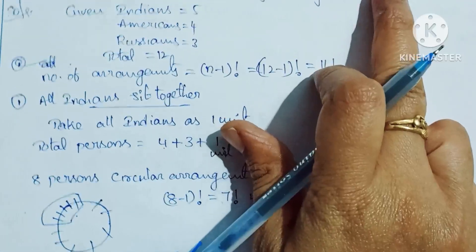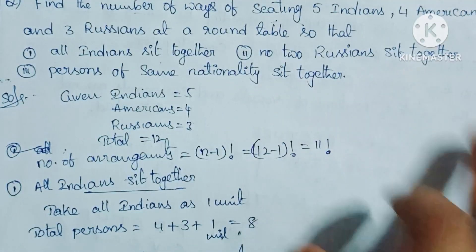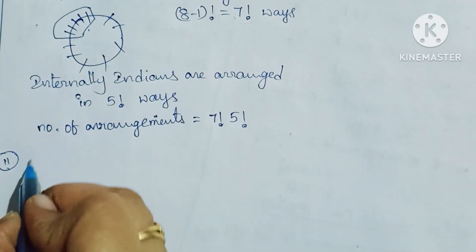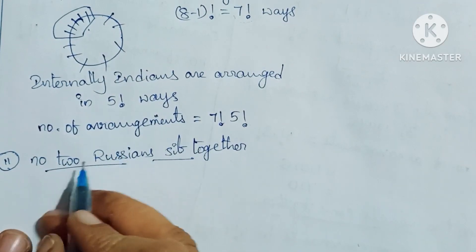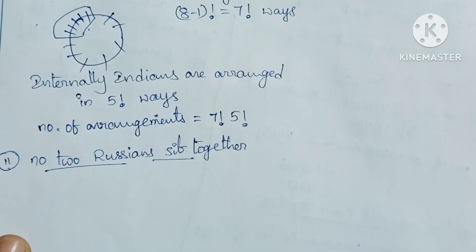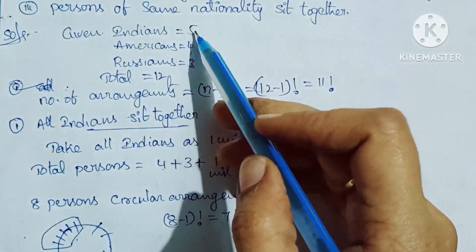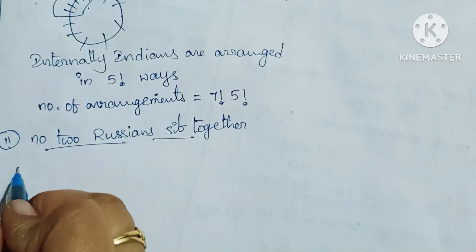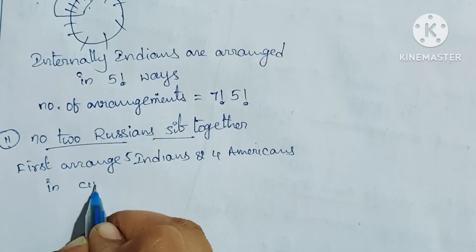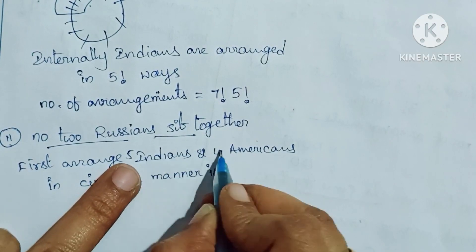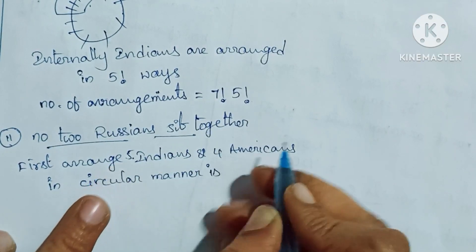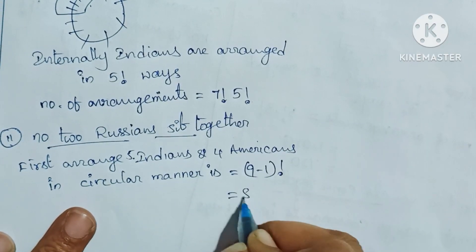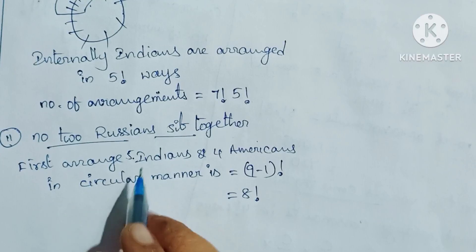Condition 2: No two Russians sit together. Leave the Russians aside and first arrange the remaining persons — Indians and Americans — in a circular manner. Total = 5 Indians + 4 Americans = 9 members, arranged in (9−1)! = 8 factorial ways.